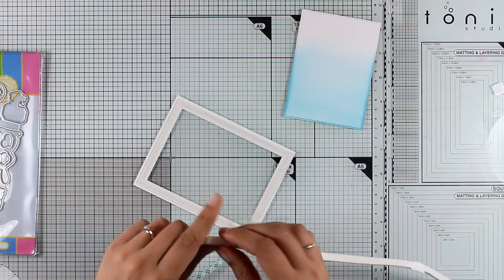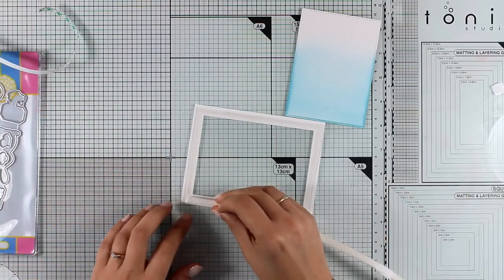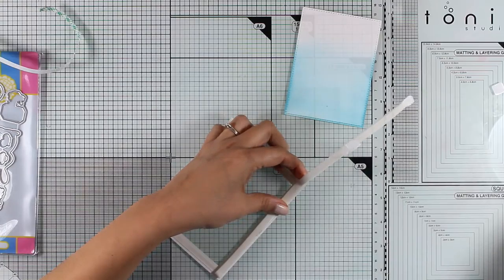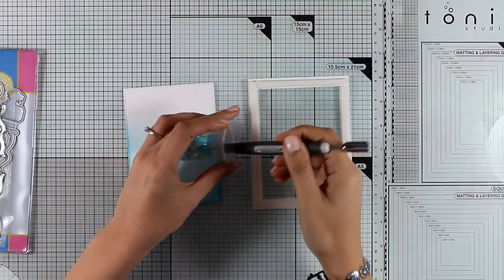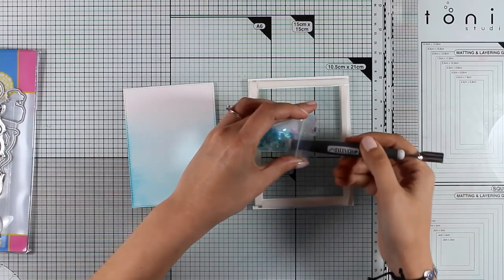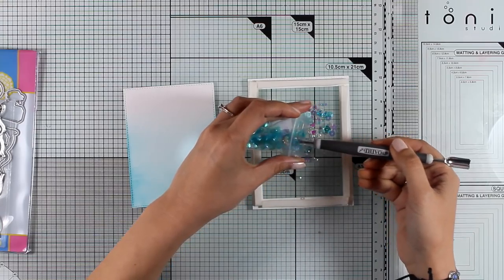Now to create my shaker card, I'm going to go all around the frame and stick some foam tape. Inside my window I'm going to add some sequins, and I chose to go with blue just because I want to match the color of the sky. I'm adding all of this sequins with my Craft Spoon by Tonic Studios, which I find very handy.